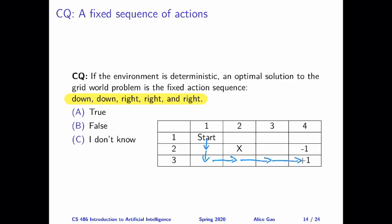So I've designed two clicker questions. Let's use these two questions to think about what happens if we ask the robot to follow a fixed sequence of actions. In this first question, let's simplify our grid world a little bit. Remember that our grid world has some uncertainty in it. So when the robot tries to go in a particular direction, it might not get there. It might get to its left or its right instead. So let's simplify this first by assuming that the environment is deterministic. With that assumption, think about this question. If the environment is deterministic, an optimal solution to the grid world problem is this fixed action sequence that's given below. Is this true or false? Think about it yourself, and then keep watching for the answer.